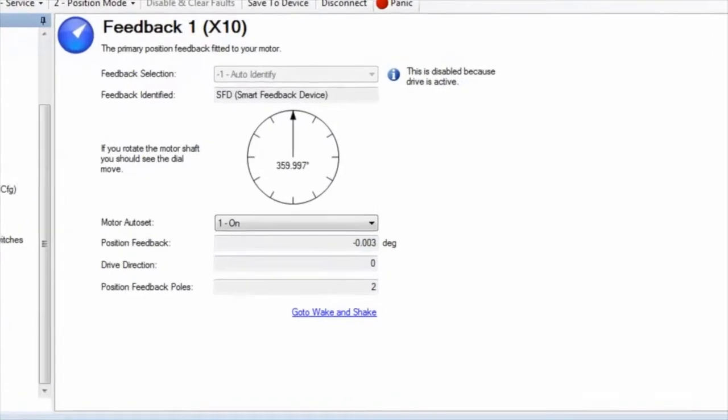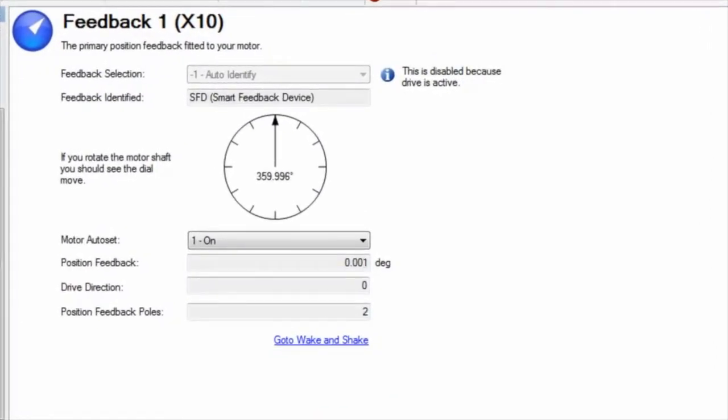If we start with the feedback device, we can wire it for clockwise rotation. When the machine is rotated clockwise, the position will count up. If it is counting down, swap A and A0 or B and B0 for a sine encoder or incremental encoder. For a resolver, swap sine and cosine.